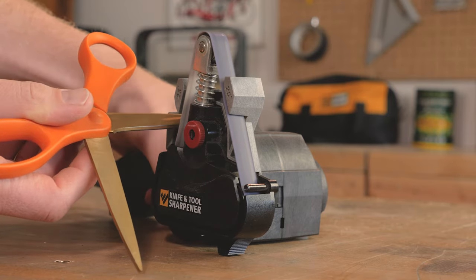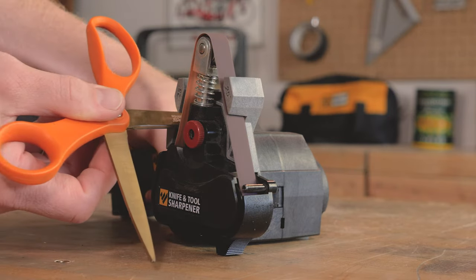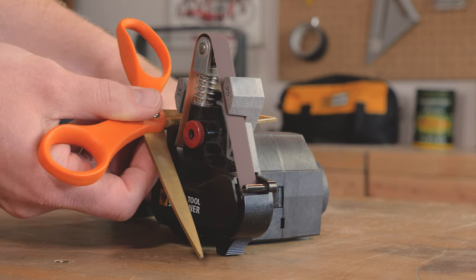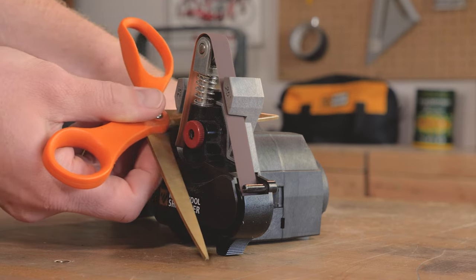Now your scissors are as good as new and ready to cut. Here's a tip: extremely dull or damaged scissors may require modest use of the red or medium grit belt to repair the cutting edges. Use sparingly.